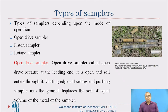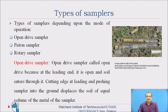Types of samplers depending upon mode of operation: open drive sampler, piston sampler, and rotary sampler. An open drive sampler is called open because at its leading end it is open and soil enters through it. The cutting edge at the leading end pushes the sampler into the ground, displacing soil equal in volume to the metal of the sampler.